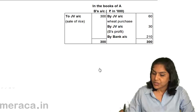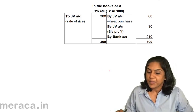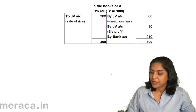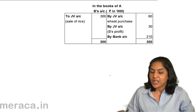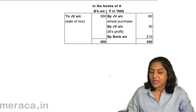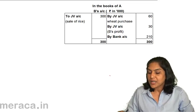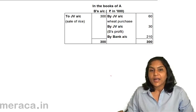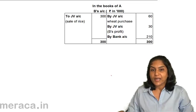To recap in the books of A: wheat purchase cost was ₹60,000, profit share was ₹30,000. On the other hand, on sale of rice, B received ₹3,00,000. Therefore, ₹2,10,000 will have to be paid by B to A. The correct answer is that the remittance by B to A is ₹2,10,000.